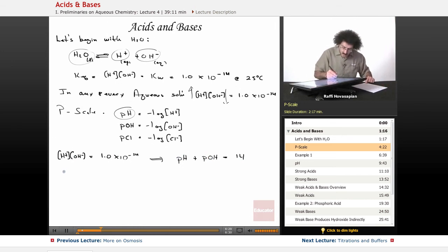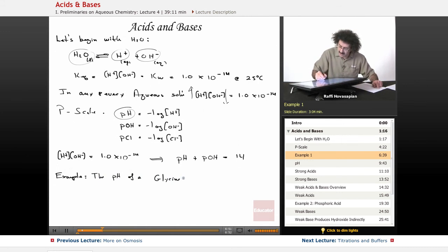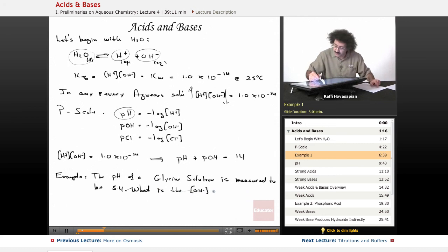Let's do an example real quickly. The pH of a glycine solution. Glycine is an amino acid, and we'll get to that in just a couple of lessons when we start to discuss proteins. It's measured to be 5.4. The question for us is, what is the hydroxide ion concentration? What is the hydroxide ion concentration in the solution?